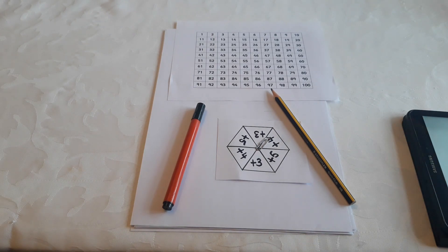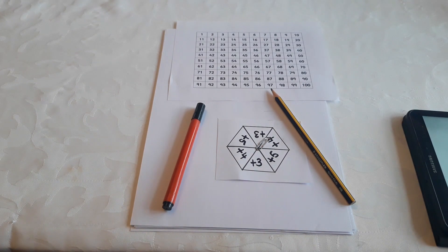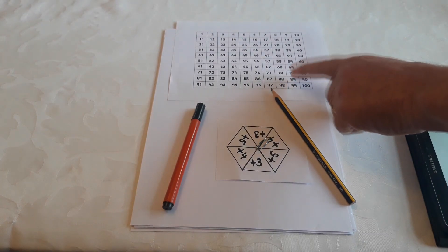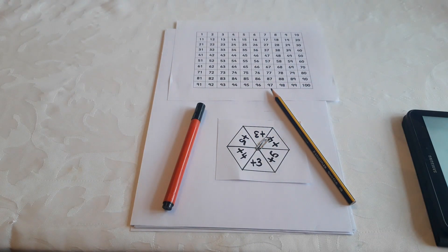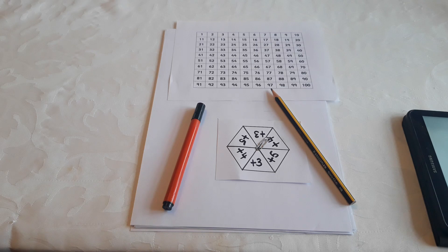You also need a piece of paper and a pen to write your numbers down in your sequence. And you need a 100 square to help you with your calculations if you need anything and also to check your answers at the end.